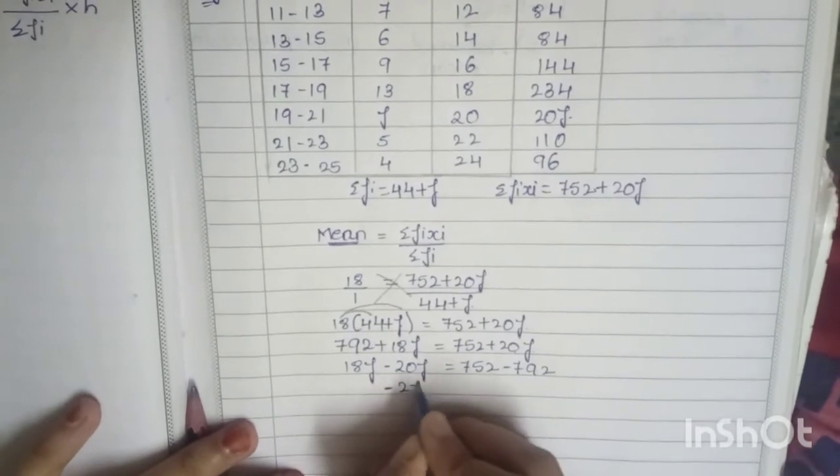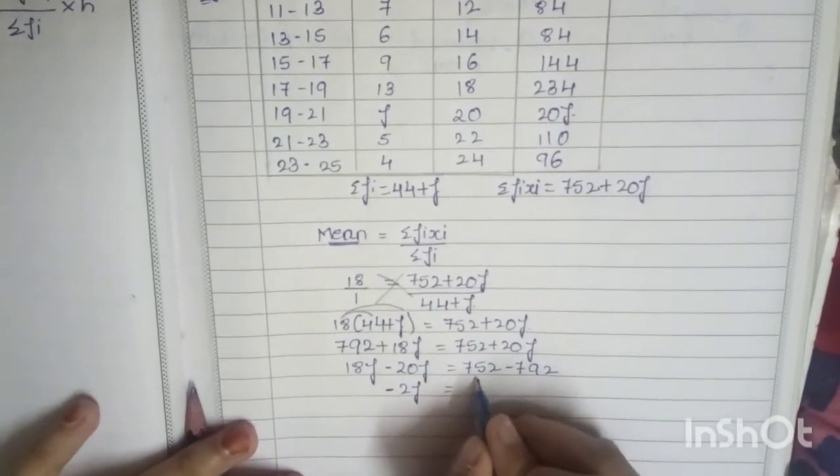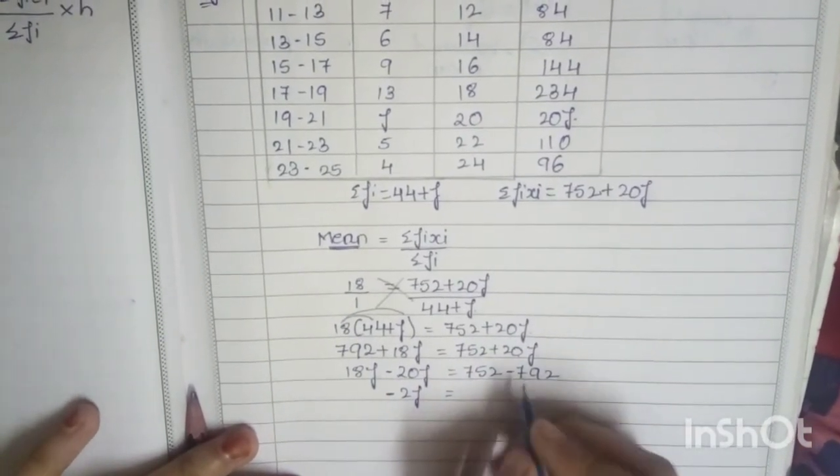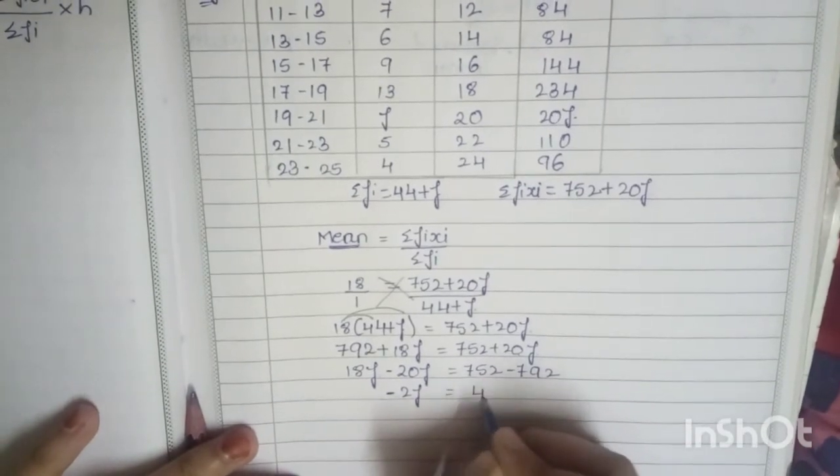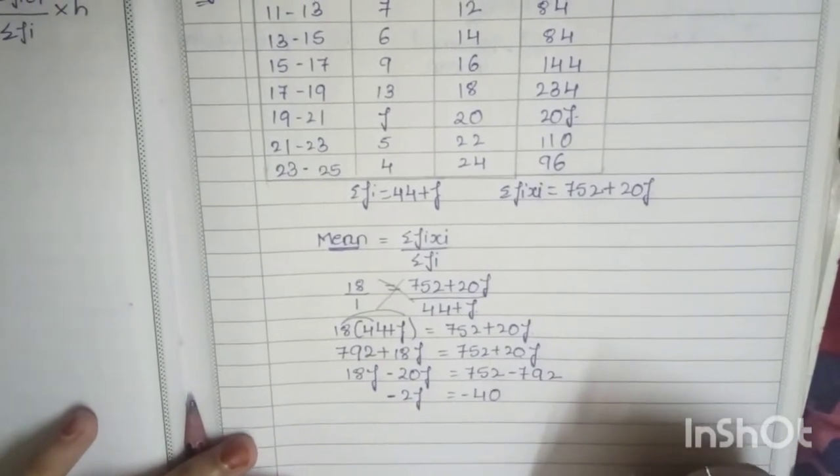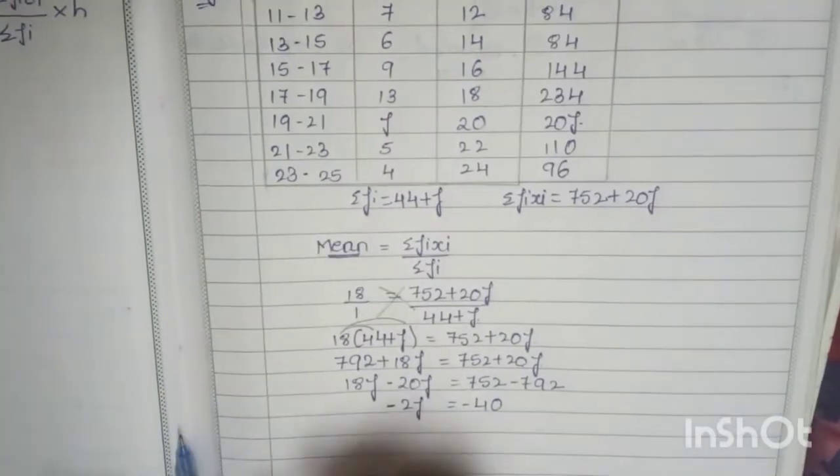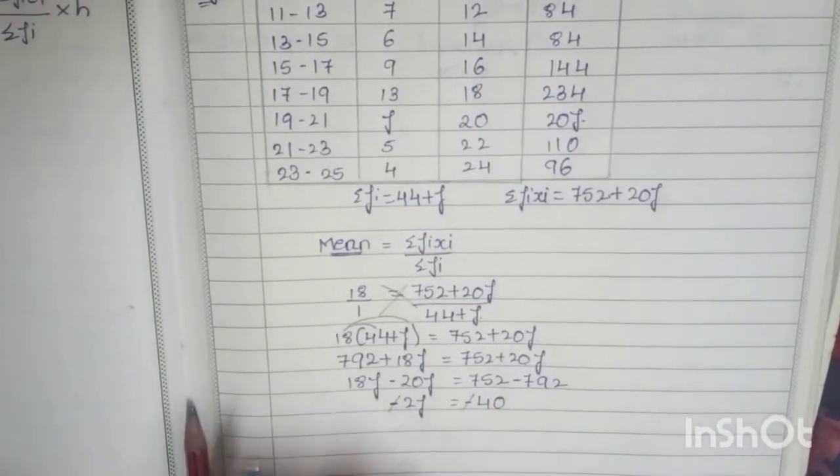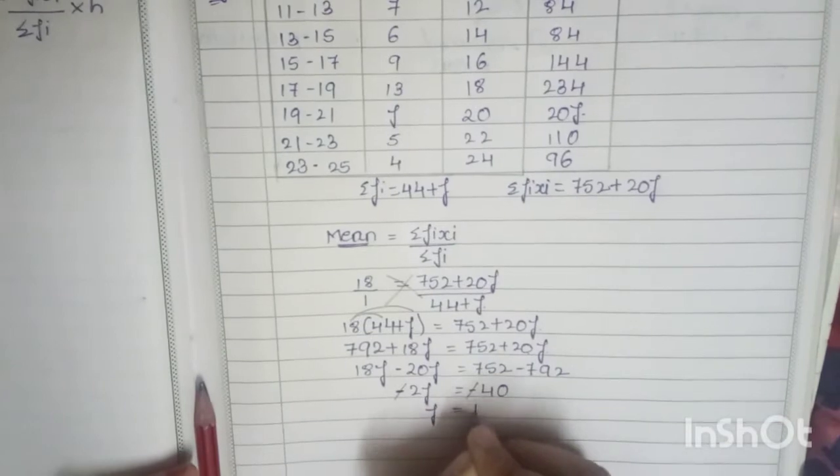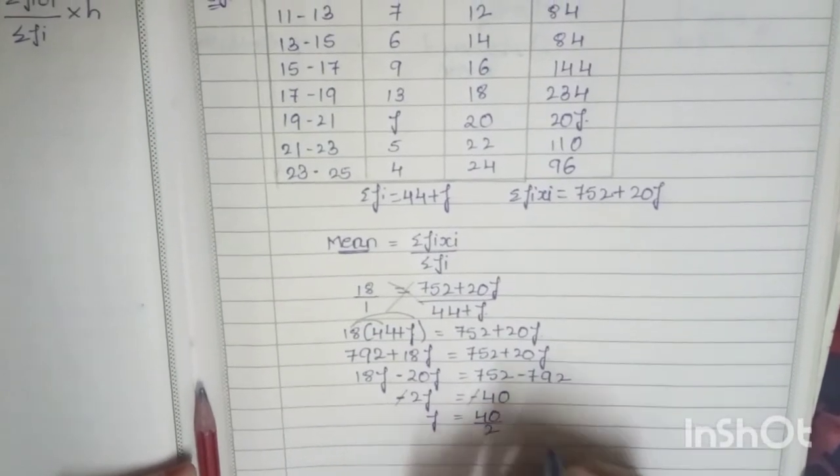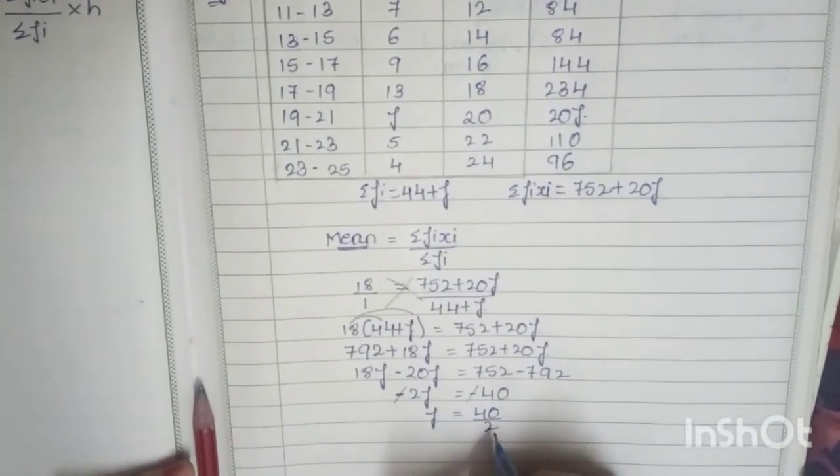On simplification, that is minus 20f plus 18f, you get minus 2f. And plus 752 minus 792 is minus 40. The negative symbols get cancelled.